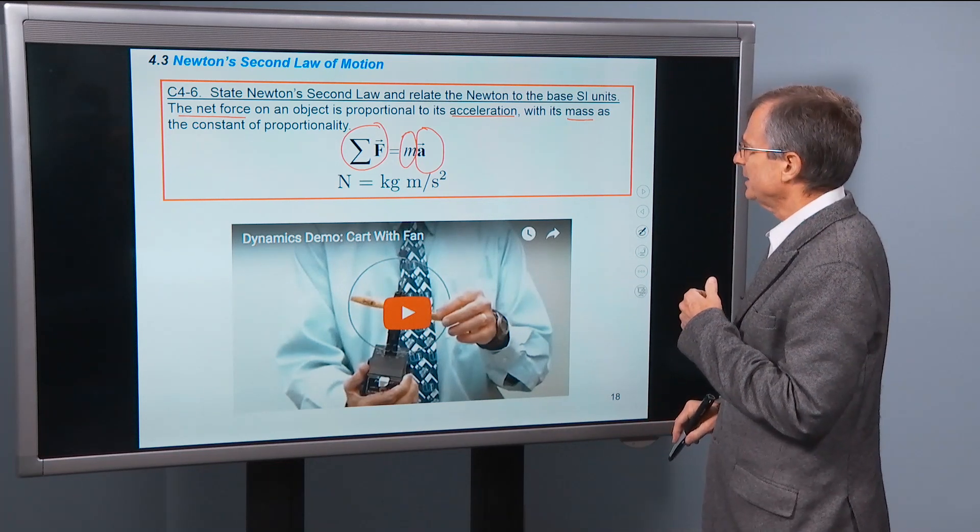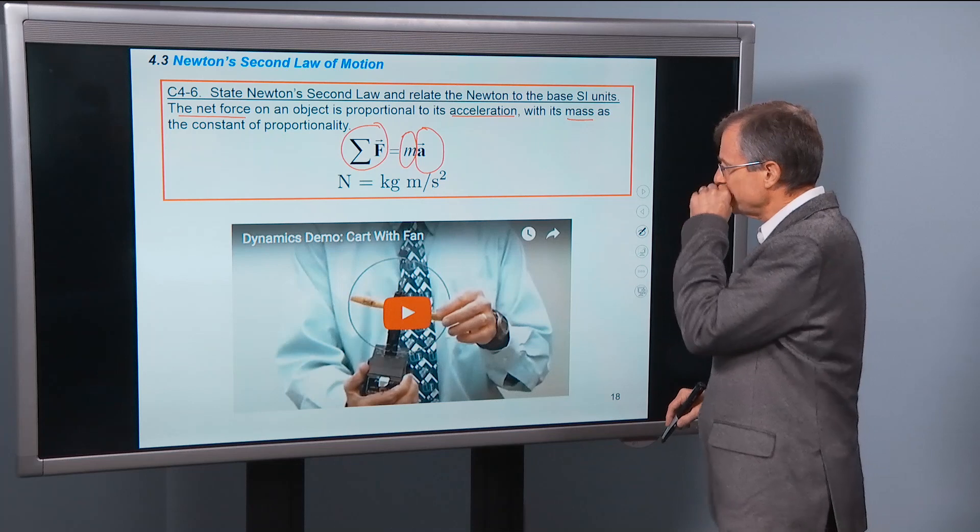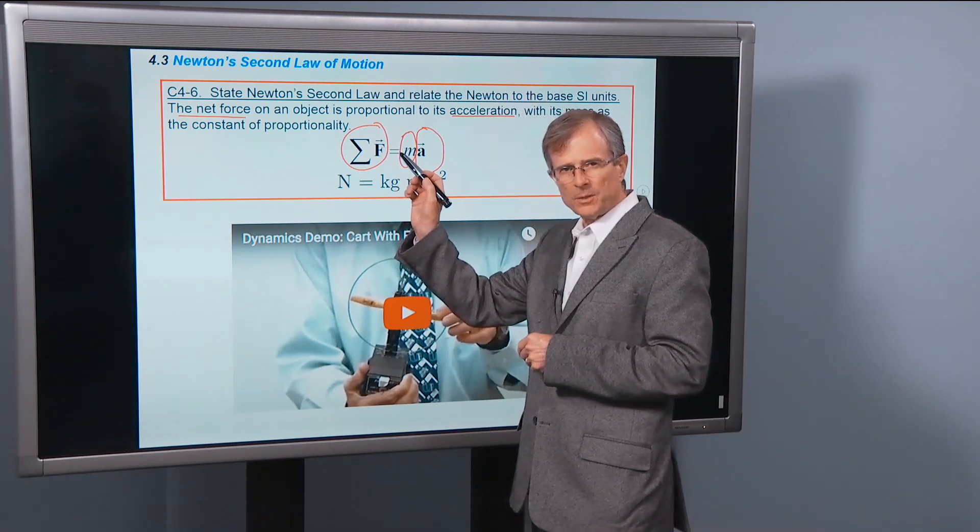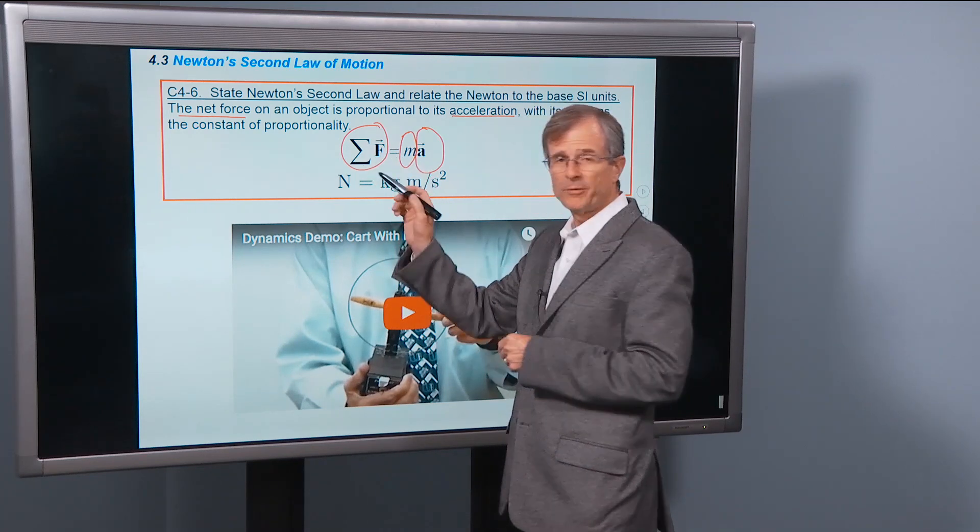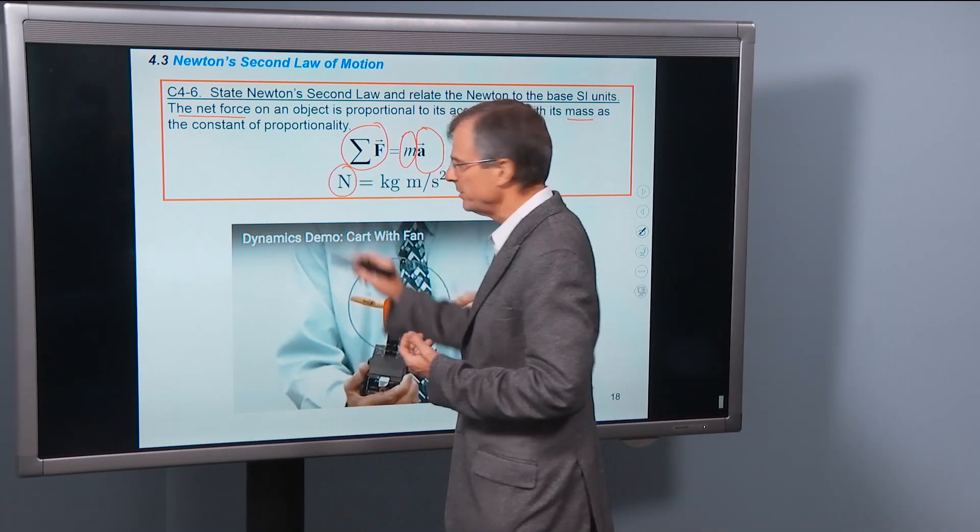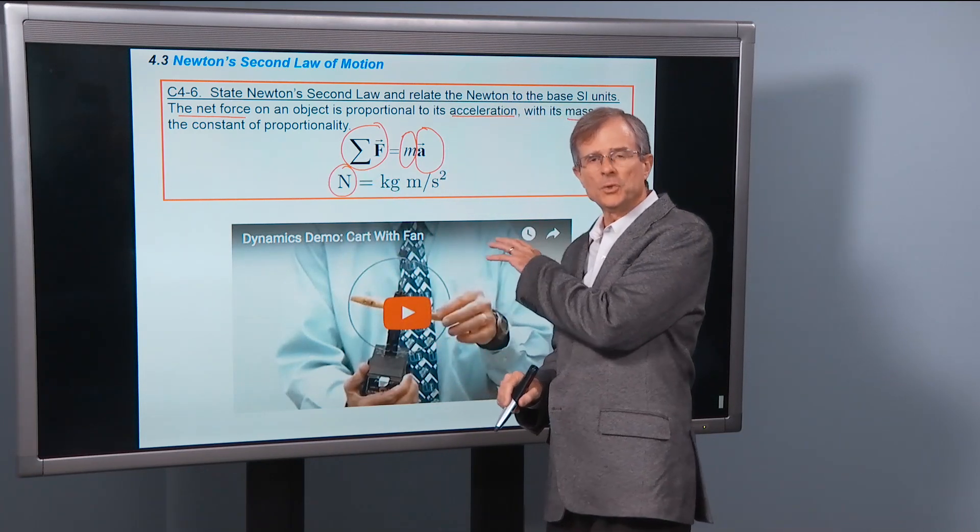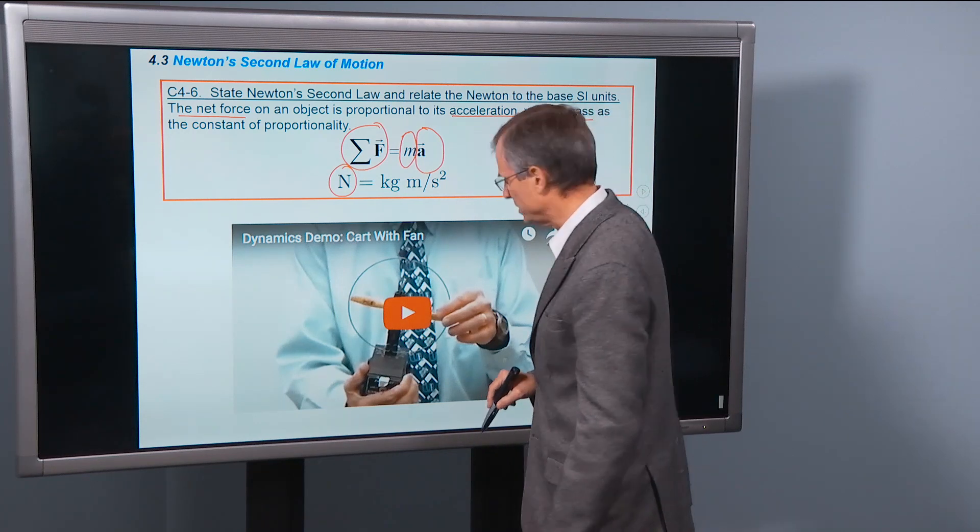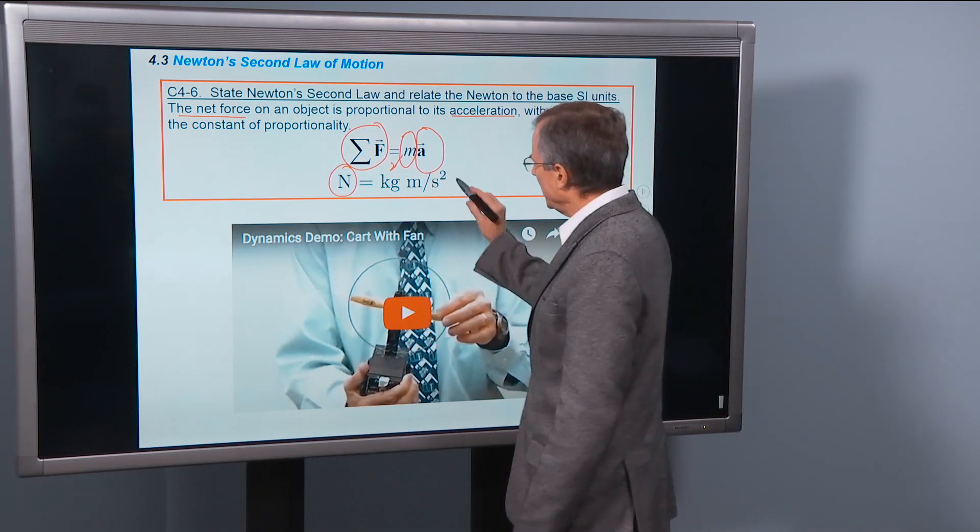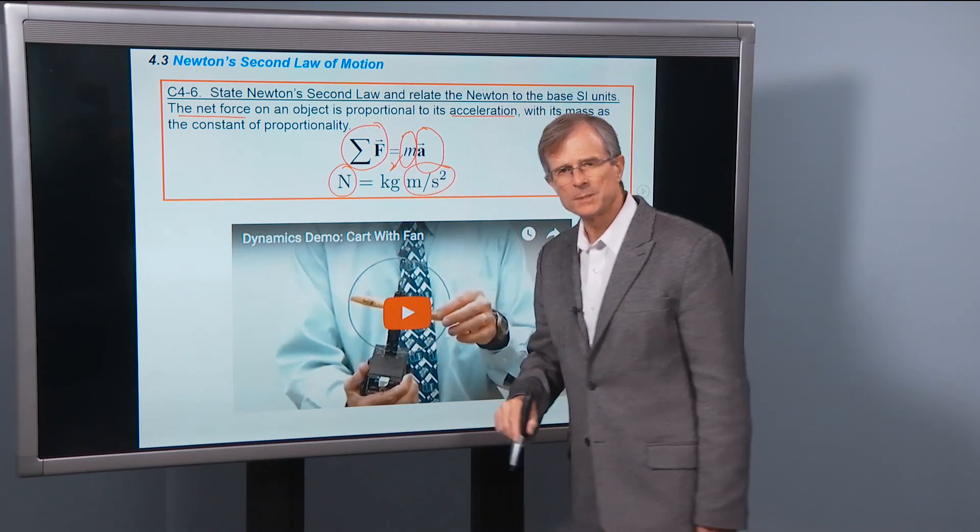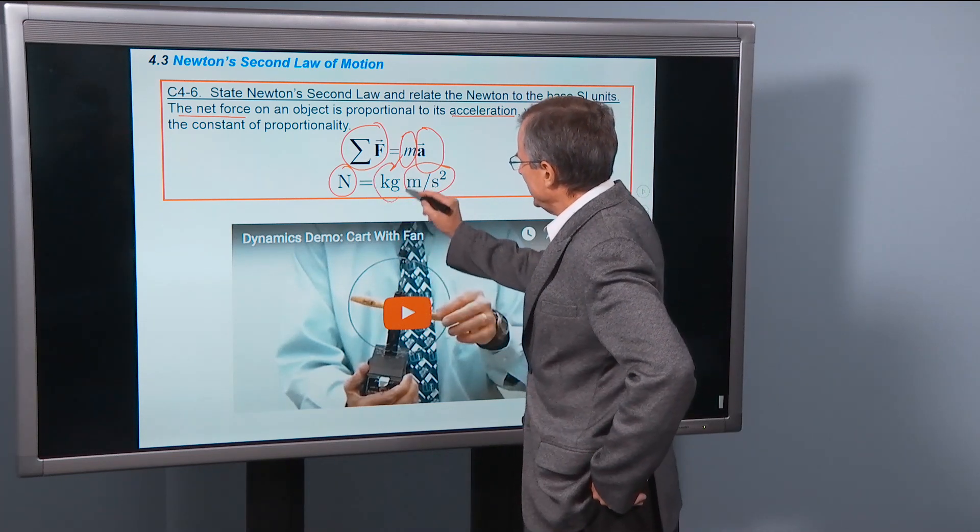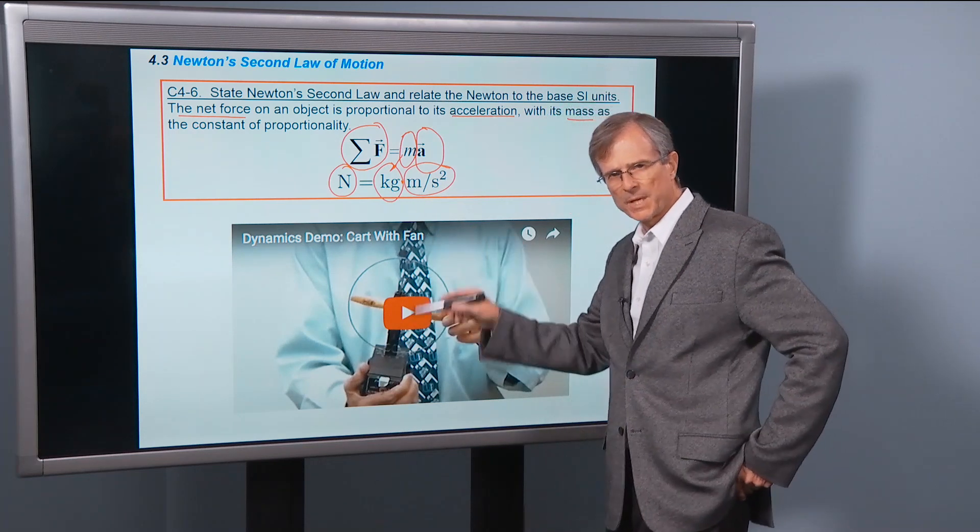Now, let's relate the Newton to the base SI units. Forces are measured in Newtons. When you sum over various forces, you're still going to be measuring the forces in Newtons. So that's why we have a newton on this side of the equation. Well mass, you know what that is, that's a kilogram, it's one of the three base units. And acceleration, we know about that too. It's meter per second squared in SI units. So a newton is a kilogram meter per second squared.